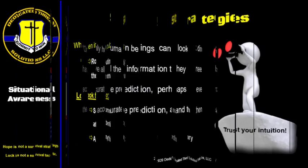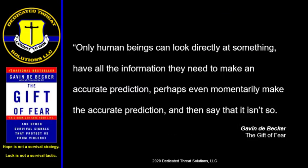I love this quote from Gavin de Becker: 'Only human beings can look directly at something, have all the information they need to make an accurate prediction, perhaps even momentarily make the accurate prediction, and then say it isn't so.' Humans are supposed to be the smartest creatures on the planet, but we engage in some of the dumbest activities. If you see a threat, acknowledge it, deal with it, and be proactive in your safety. If you have not yet read The Gift of Fear, go get that book — it should be on the bookshelf of anyone who cares about safety and security.